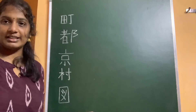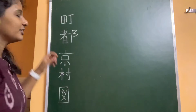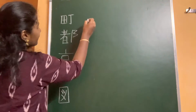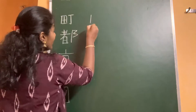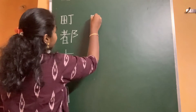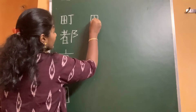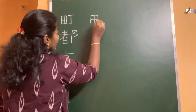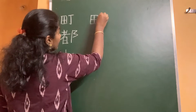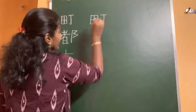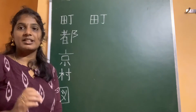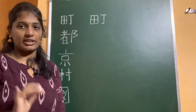Let's see how to draw all these kanjis. The first kanji is Machi. First stroke, second, third, fourth and fifth, sixth and seventh. So this is the kanji that means Machi — a small town or a district.